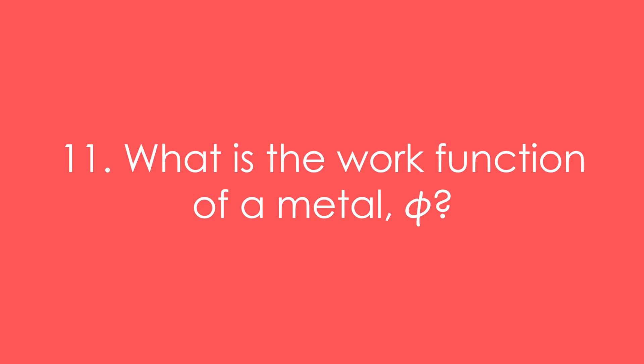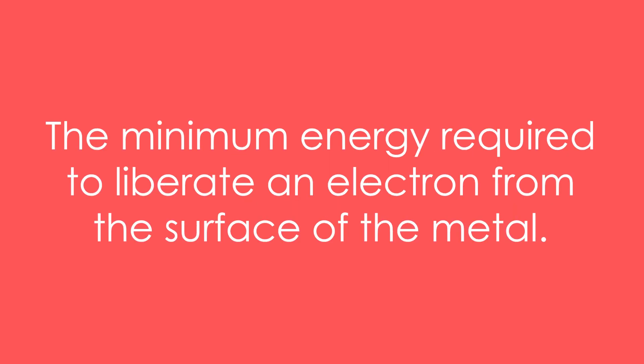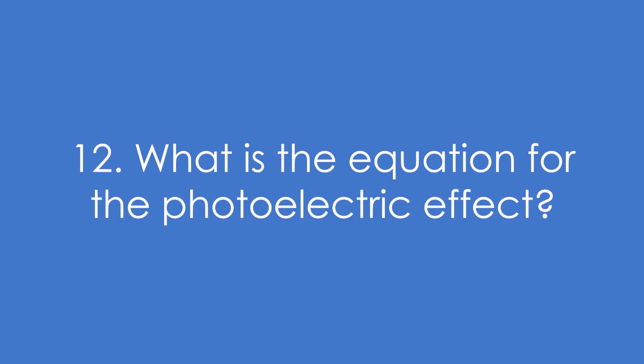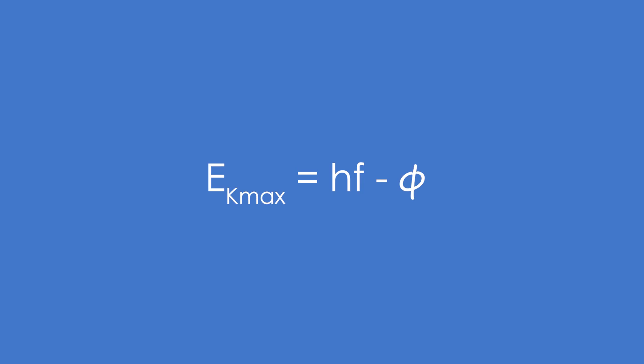Eleven, what is the work function of a metal, phi? The work function is the minimum energy required to liberate an electron from the surface of the metal. Twelve, what is the equation for the photoelectric effect? Ek max equals hf minus phi.